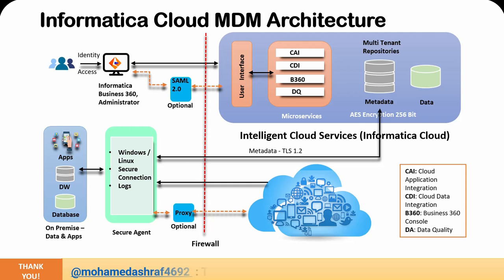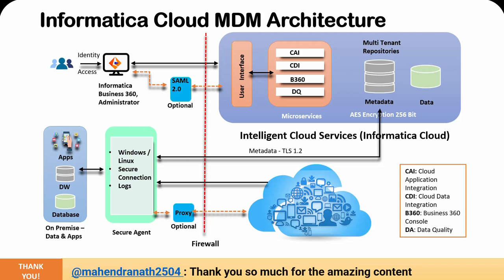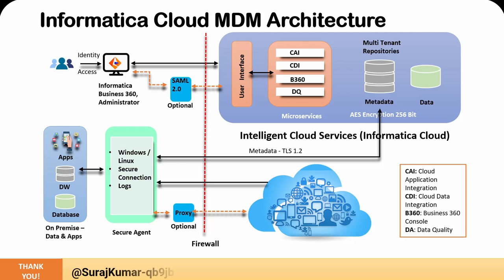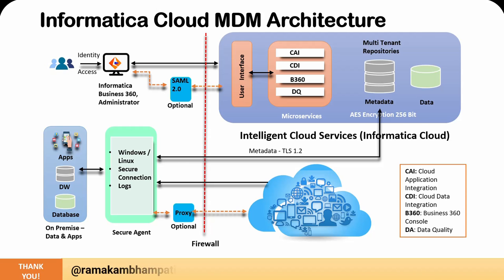Now that we understand what is present in the Informatica cloud services, let's look at how your on-premise components interact with it. On-premise, you might have applications, a data warehouse, or a legacy database. All these components would like to connect to the data present in the Informatica cloud. For that, first of all, you need to have the Secure Agent installed on-premise. Informatica also provides a runtime environment which you can use instead of the Secure Agent. The Secure Agent is used to execute jobs or tasks needed to process data or perform functionality required by your organization. It is installed on either a Windows or Linux system and provides a very secure connection, also used to access logs.